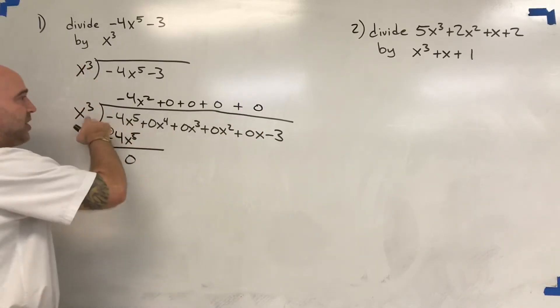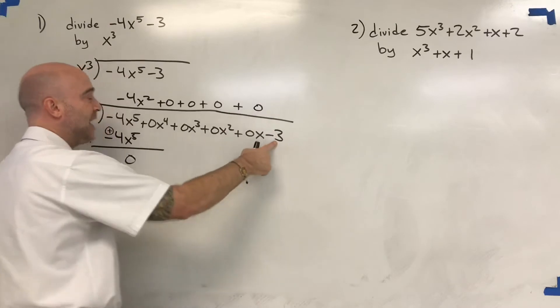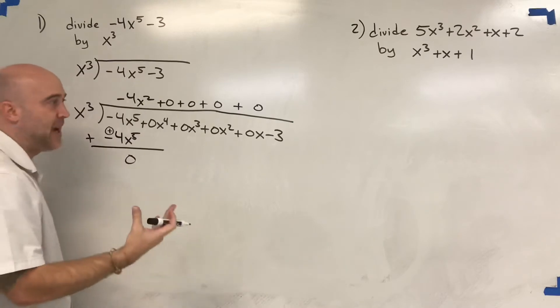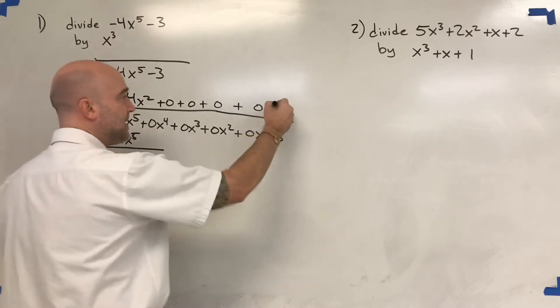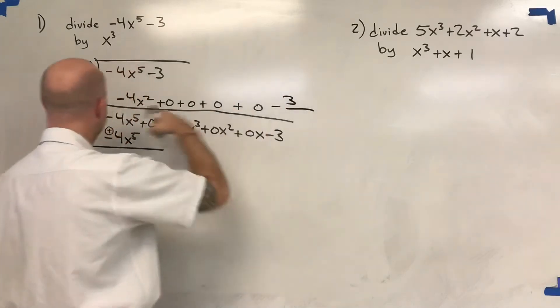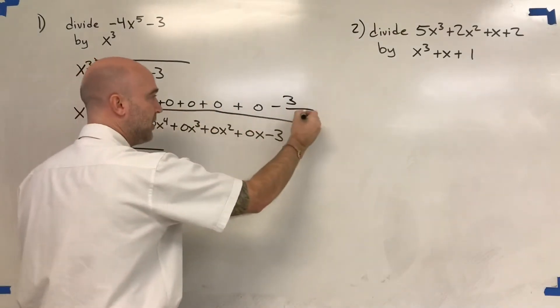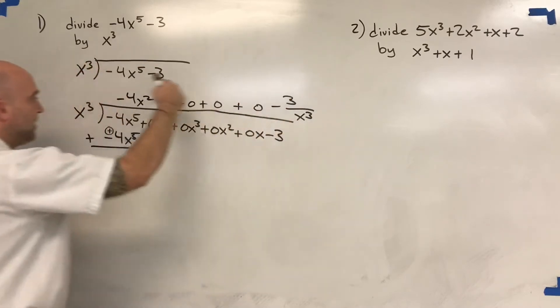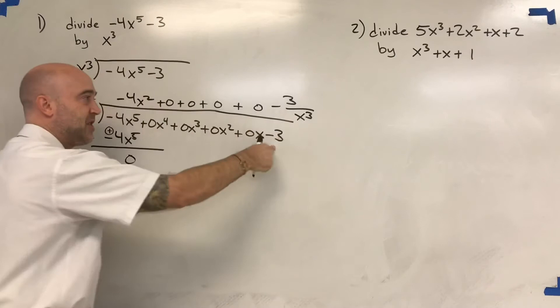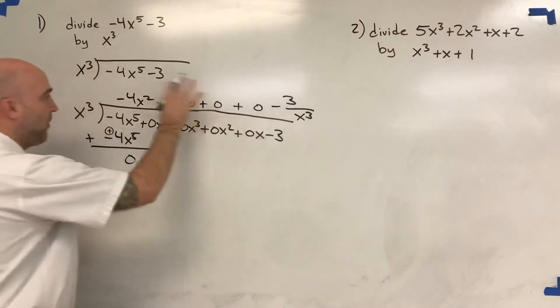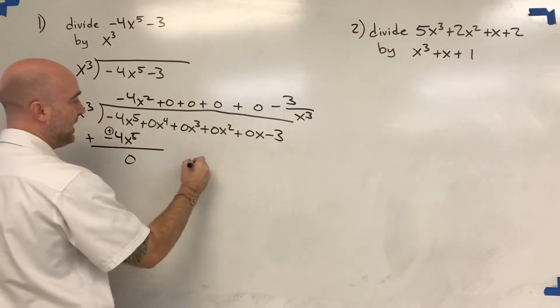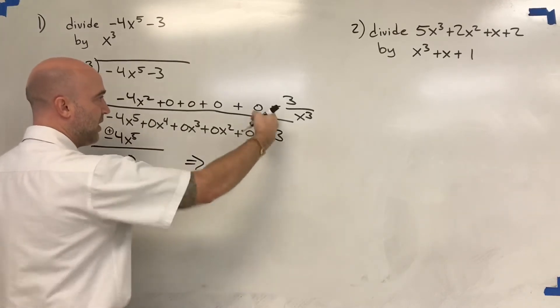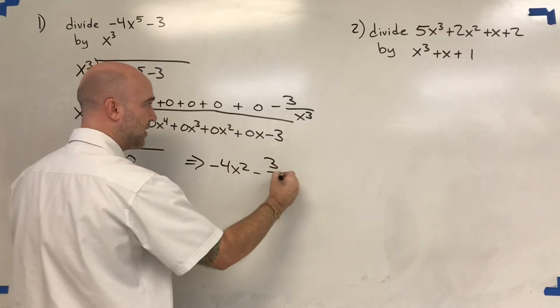And then x cubed times what is negative 3? Well, this is the one where we kind of look at it as a fraction. That's what I always kind of remember. It's negative 3 over x cubed. And it should make sense. If I multiply negative 3 over x cubed times this, the x cubes cancel, and I'm just left with negative 3. So our final answer here, if I'm dividing it, turns into negative 4x squared minus 3 over x cubed.